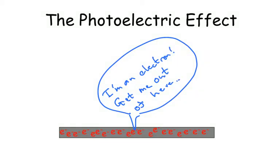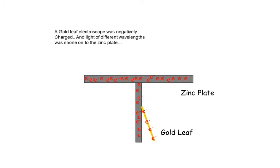Hi guys, today we're going to go through the photoelectric effect. A gold leaf electroscope was negatively charged and light of different wavelengths was shone onto the zinc plate.